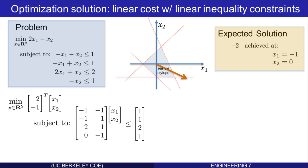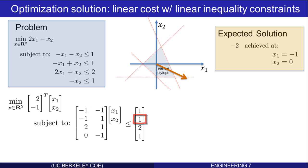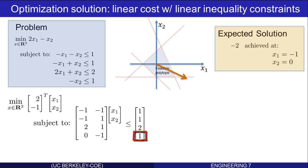How will we formulate this with LPSolver? Let's write it down in standard form. The cost minimization is 2 times x1 minus 1 times x2, subject to four linear inequalities. Reading the inequalities: negative x1 minus x2 is less than 1; negative x1 plus x2 is less than 1; 2x1 plus x2 is less than 2; and negative x2 is less than or equal to 1. That is the problem in standard form.